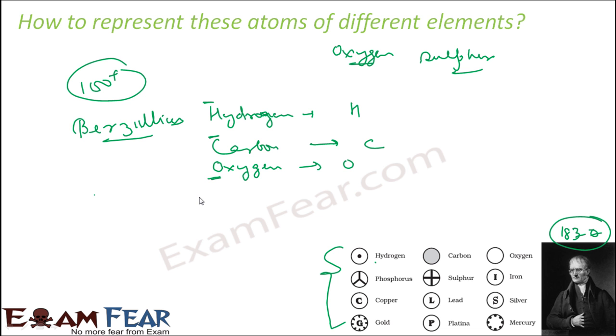But there are some which are represented by two letters. For example, Silicon. It is represented by Si, the first two letters, because S is already given for Sulphur. So if you talk about Sulphur, it is written as S. The next element found was Silicon. You can't give S because S is already allocated to Sulphur. So it is Si.